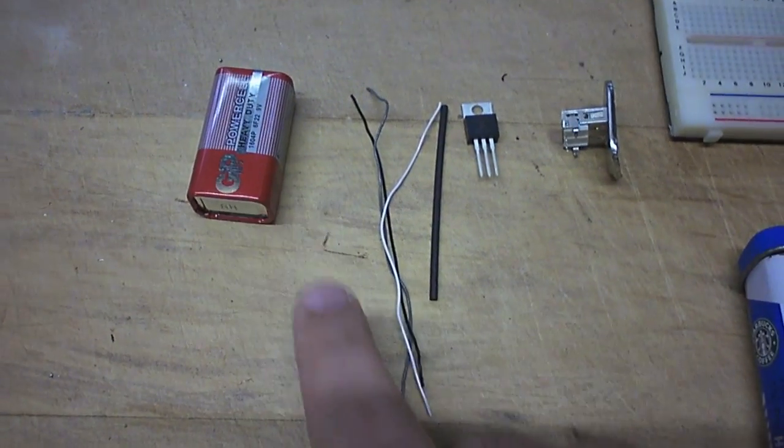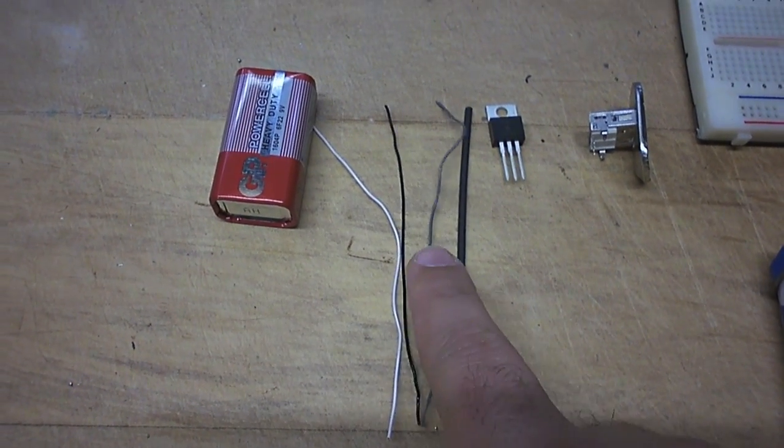So here I've got a 9V battery, some wires that I'm going to use to connect it all up, and a little bit of shrink wrap.